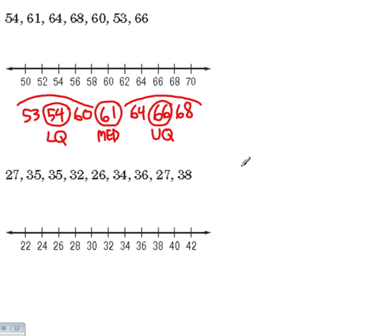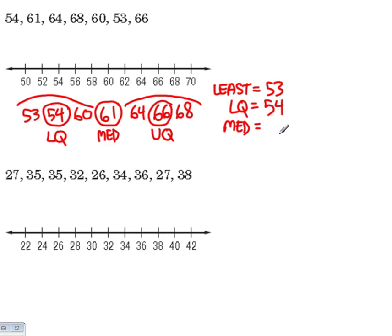So now I'm going to list my important numbers for this set. The least item is 53, then we have the lower quartile which is 54, the median is 61, the upper quartile is 66, and the greatest item number is 68.